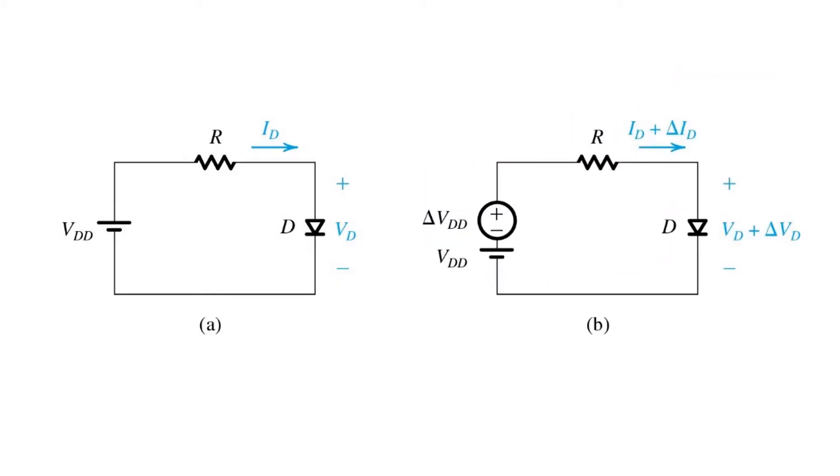The technique is applicable when we consider the situation shown here, where the voltage VDD undergoes a small change, delta VDD. As indicated, the current ID also changes by an increment, delta ID, and the diode voltage VD changes by an increment, delta VD. When this happens, let's say we want to find a quick way to determine the values of these incremental changes.